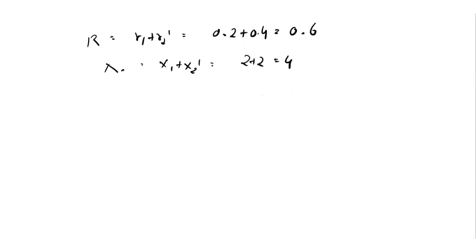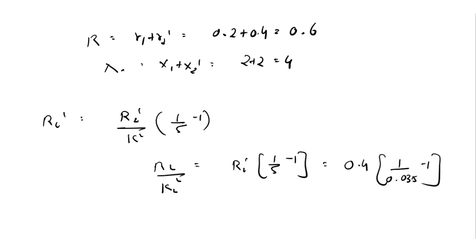Now RL dash is equal to r2 dash divided by k square multiplied by 1 divided by s minus 1. So RL divided by k square is equal to r2 dash, 1 divided by s minus 1, which is equal to 0.4, 1 divided by 0.035 minus 1. So solving this we will get 11.03 ohm.